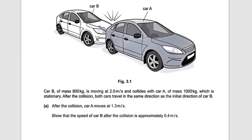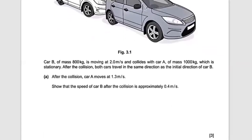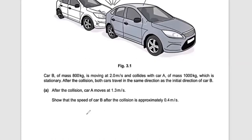Because Car B was coming from behind Car A, both cars will move in the same direction as Car B after the collision. After the collision, Car A moves at 1.3 meters per second. We have to show that the speed of Car B after the collision is approximately 0.4 meters per second.